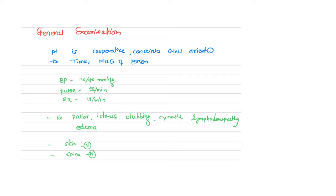No pallor, icterus, clubbing, cyanosis, lymphadenopathy, or edema. These are very important topics. In respiratory cases, clubbing can be seen in emphysema, bronchitis, abscess, lung cancer, and interstitial lung disease. Edema in respiratory cases can be seen in cor pulmonale. Please read these topics seriously as the examiner can ask many questions.